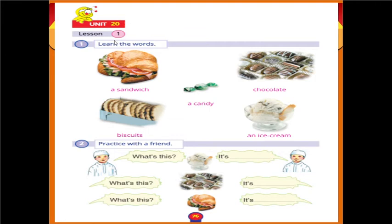Unit 20, Listen 1 — let's learn the words. Here we have sandwich, candy, biscuit, chocolate, biscuit, and ice cream. Can you tell me what is this? It is an ice cream. Can you tell me what is this? It is a chocolate. Can you tell me what is this? It is a sandwich.